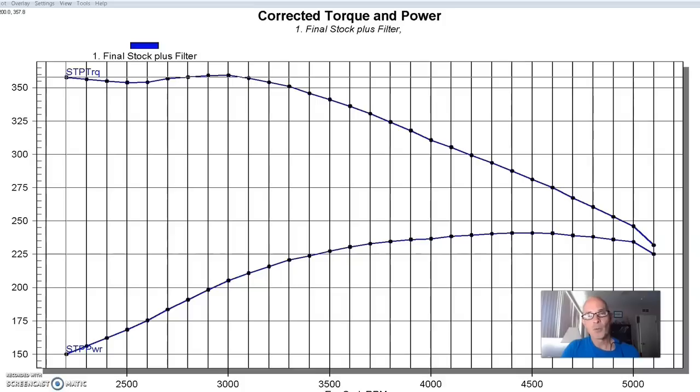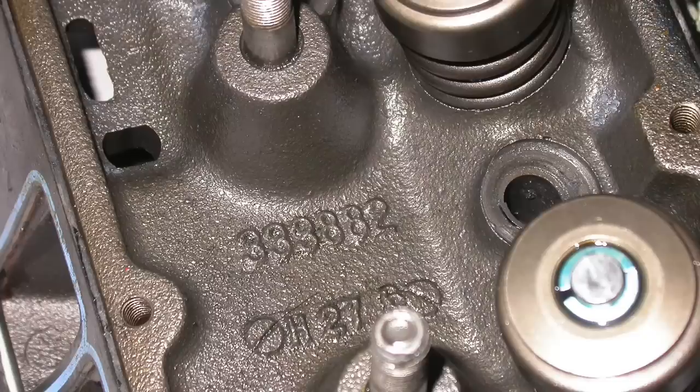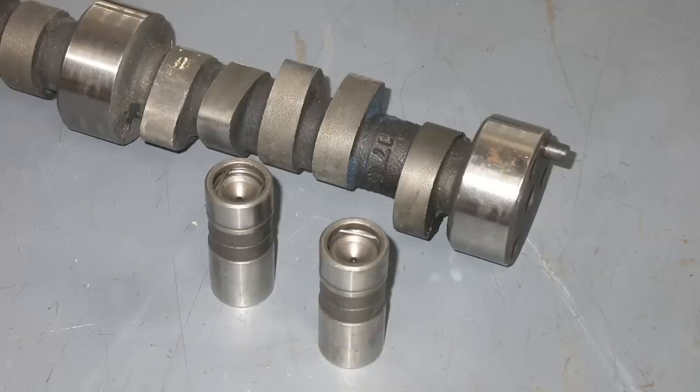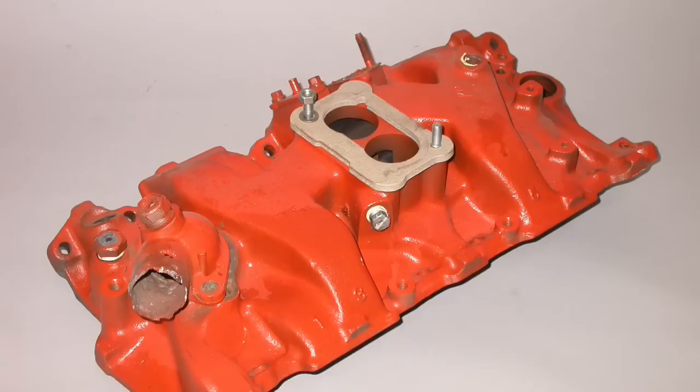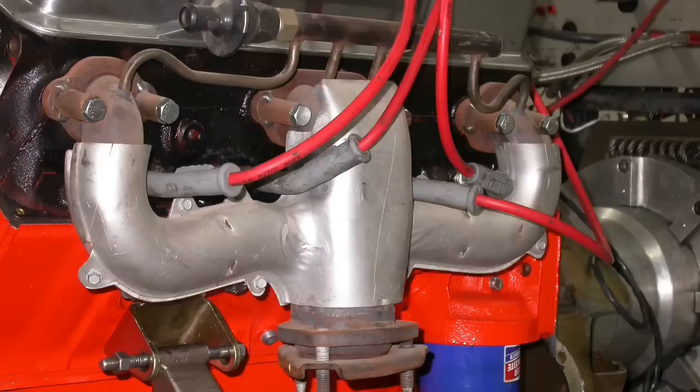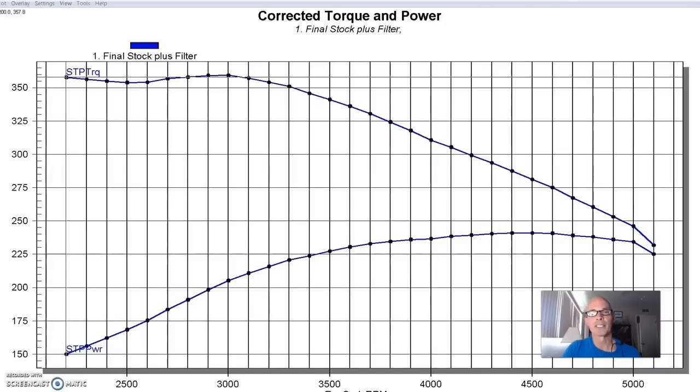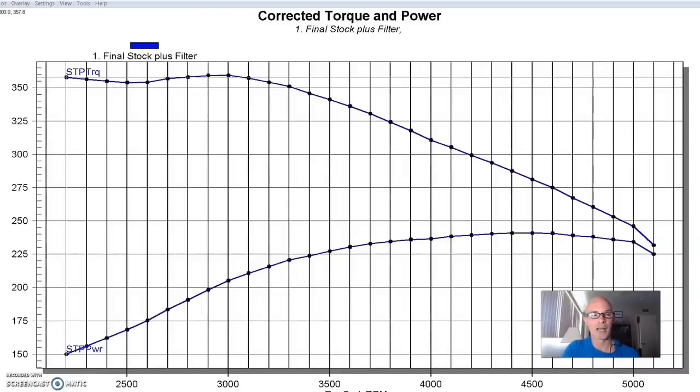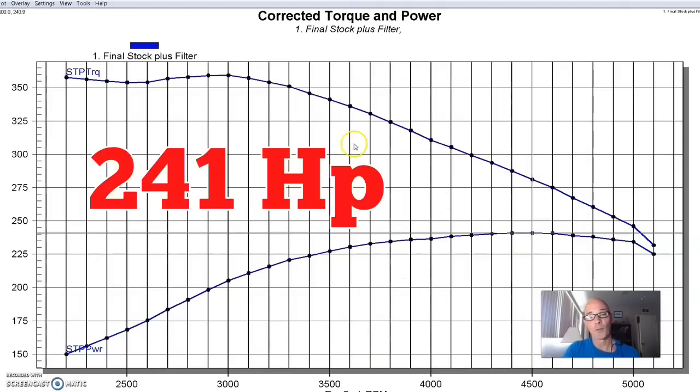But to start off, we put together this 350 and we equipped it with a set of stock 882 smog heads, basically a stock hydraulic flat tappet camshaft and a two barrel intake. We also installed the factory cast iron exhaust manifolds and basically just ran exhaust out of the cast iron exhaust manifolds back to the back with no mufflers or anything. So this is kind of your bare bones basic small block Chevy with a two barrel intake manifold, cast iron intake manifold, then a two barrel Rochester carburetor.